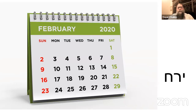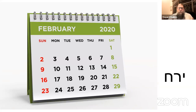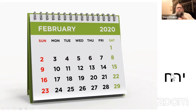'Yerach' literally means 'moon' — it is a span of time. The term normally used in the Torah for a month is 'chodesh.' The difference is that 'yerach' simply means 28, 29, or 30 days — the celestial body called the moon — and it just signifies the passage of time.